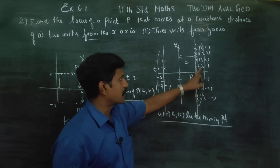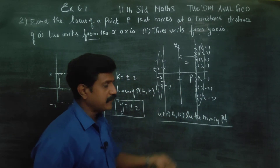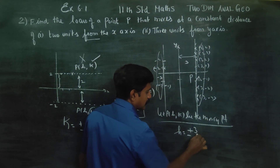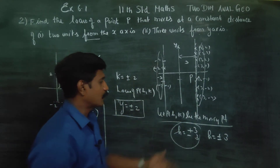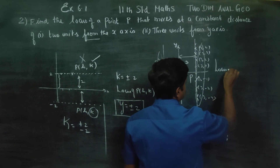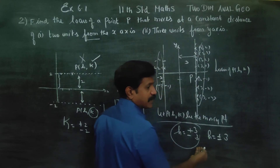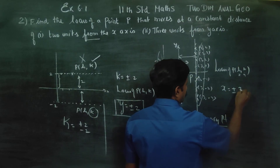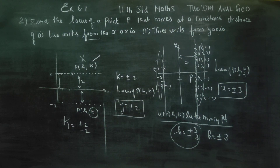h is equal to plus or minus 3. The locus of P — replacing H, K with X, Y — the equation becomes x is equal to plus or minus 3. That is the locus for the second subdivision. Thank you.